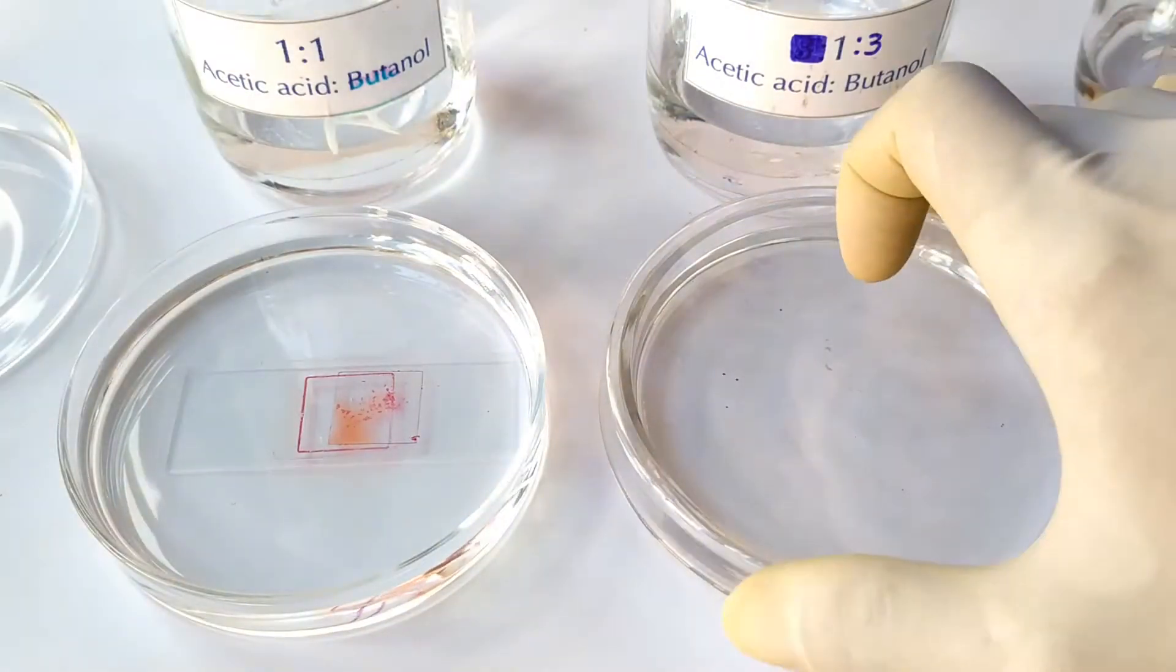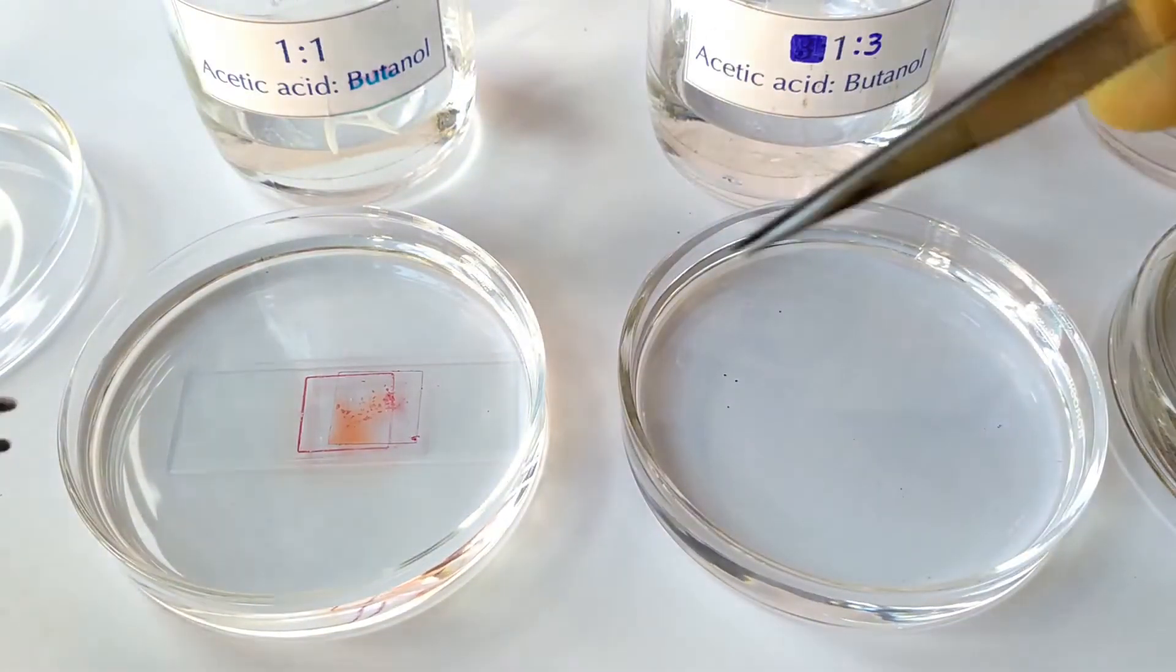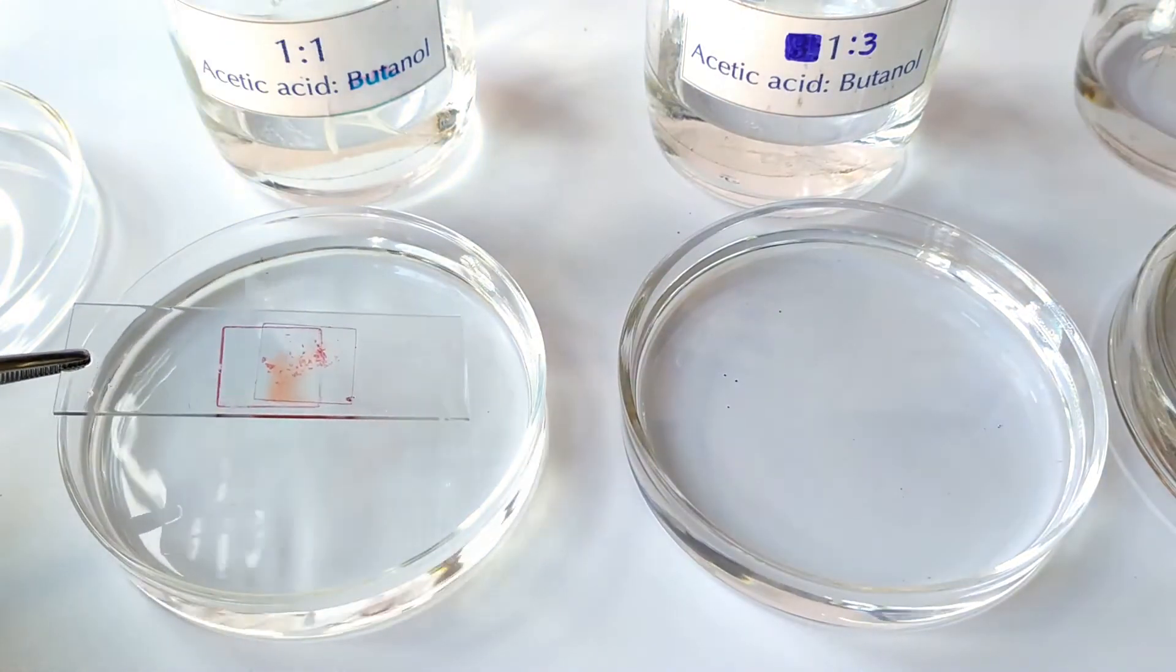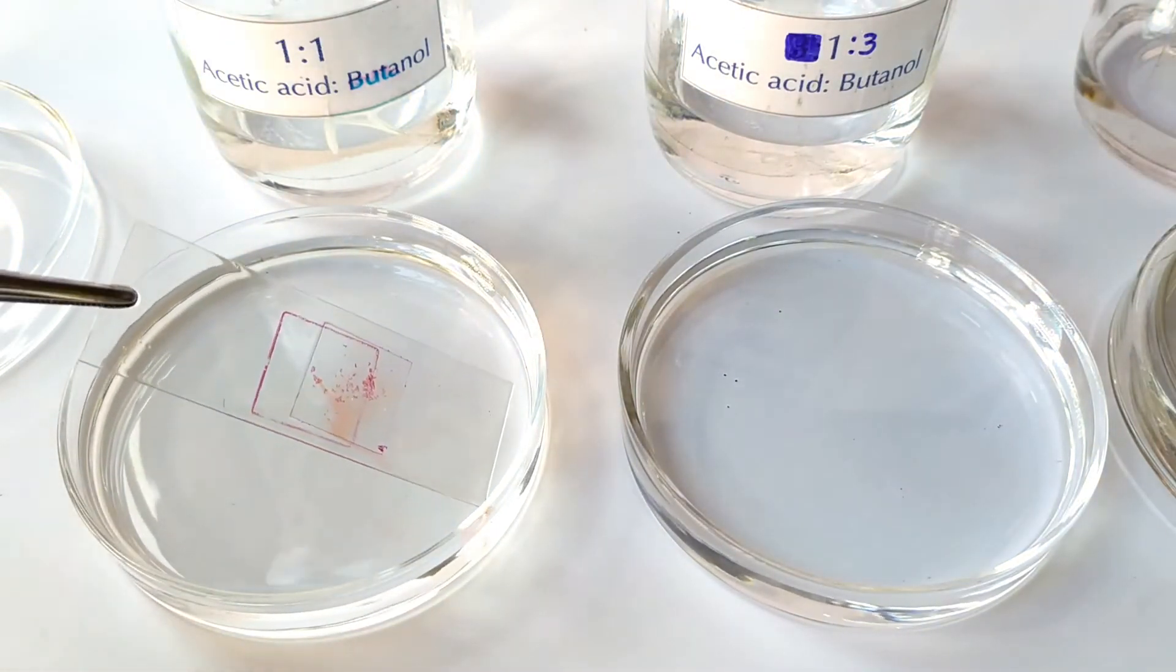Now transfer the slide and cover slip into a second petri dish containing 3 parts of butanol and 1 part of acetic acid and leave it immersed for another 10 minutes.